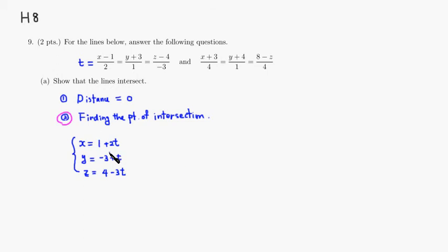And then we can just plug them in. So we can just use the first equation right here. So plug them in. So x is 1 plus 2t. And you put that in 1 plus 2t plus 3. I can write it as 4 plus 2t over 4. And this must be equal to, y is negative 3 plus t. You are adding 4, so it's going to be 1 plus t over 1.